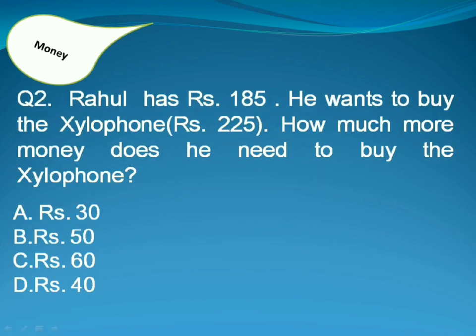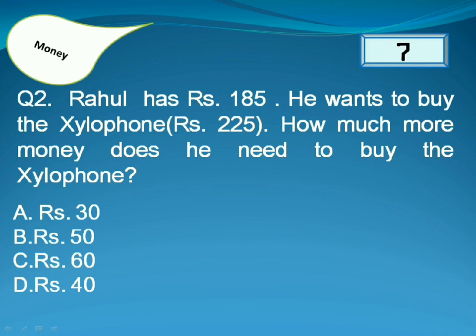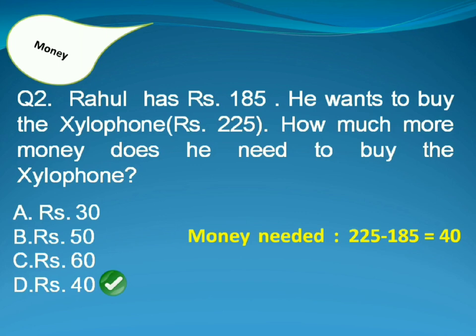Rahul has 185 rupees. He wants to buy a xylophone for 225 rupees. How much more money does he need to buy the xylophone? Answer is Option D. Because money needed is 225 minus 185 is equal to 40.